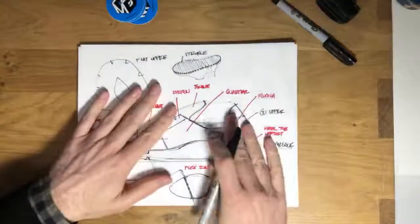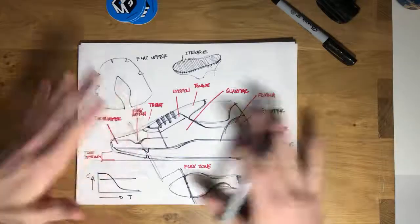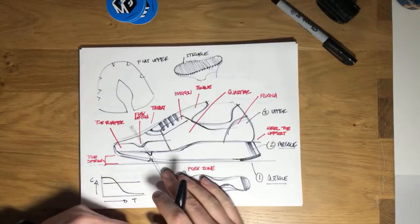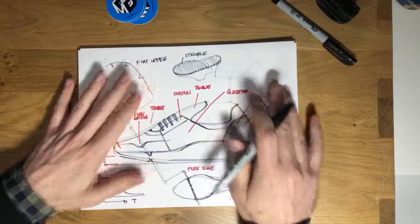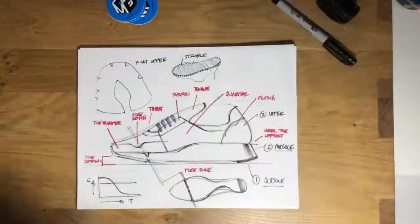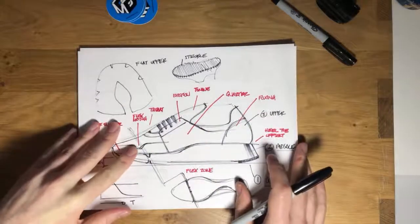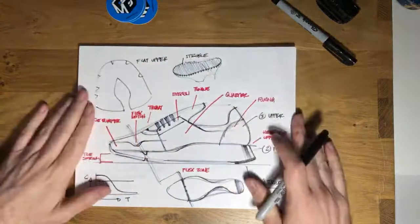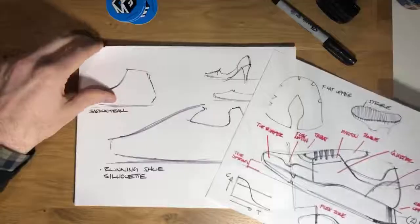Now we can do a sketch. As someone who's designed a lot of shoes, I'll look at a young designer's sketch and it won't accommodate for any of these things — like, where did the pieces all come together? You can tell when someone just doesn't know the components of a shoe. This is why it's so helpful to understand them. Now that we've covered some of the basic things, let's dive into sketching a shoe and I'll show how these things really affect what it looks like.